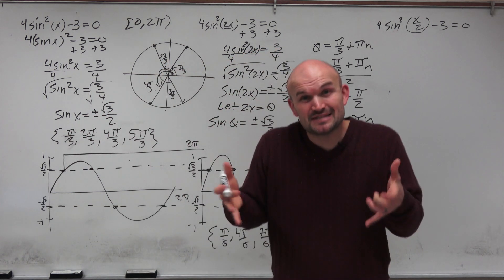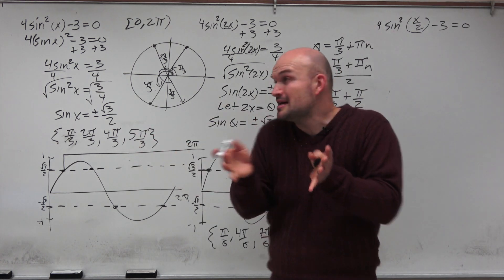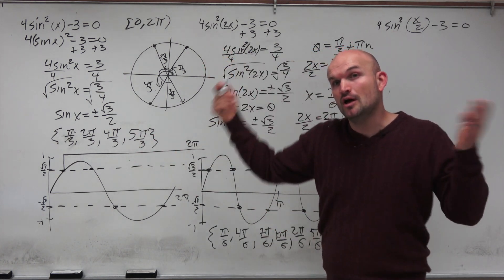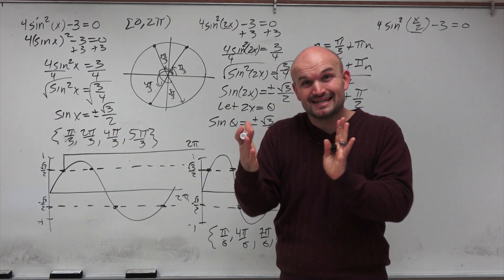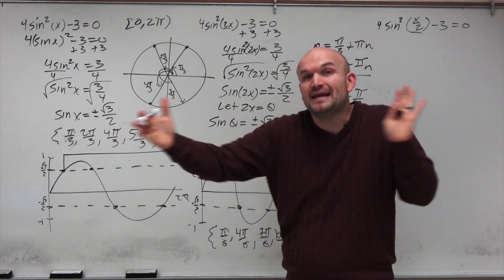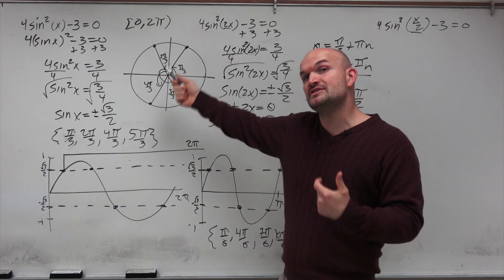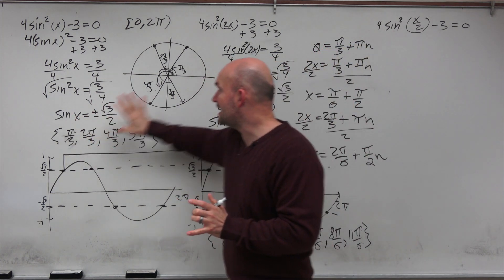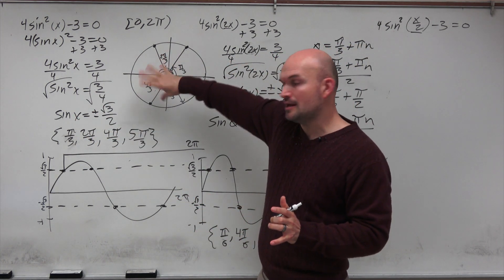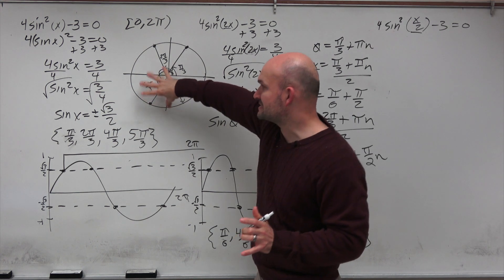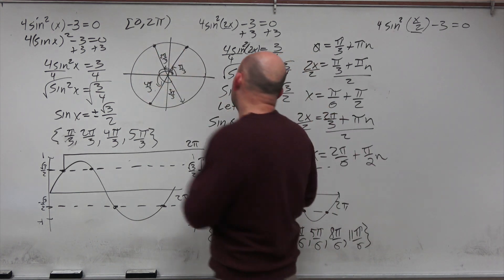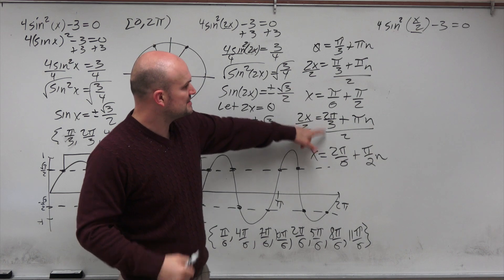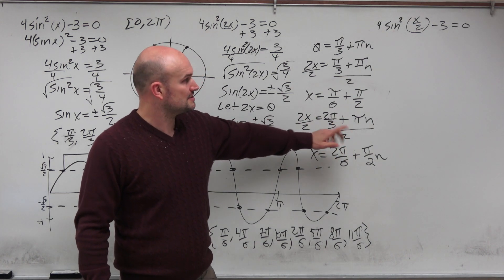So you can see we doubled up those solutions because with 2x — the double angle — the graph is compressed, putting two periods within the interval 0 to 2π. It's helpful to identify unit circle solutions first, and then add extra intervals to find all solutions.